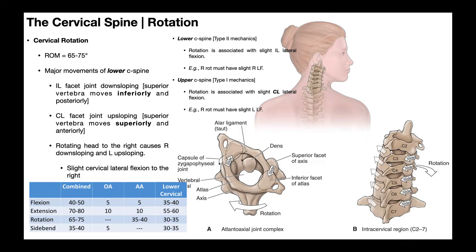Now let's talk about rotation, again focusing on the lower cervical spine. This individual is rotating their neck to the right — right rotation. The ipsilateral side undergoes down-sloping, and the contralateral side undergoes up-sloping. So with cervical rotation to the right, the right side down-slopes and the left side up-slopes.